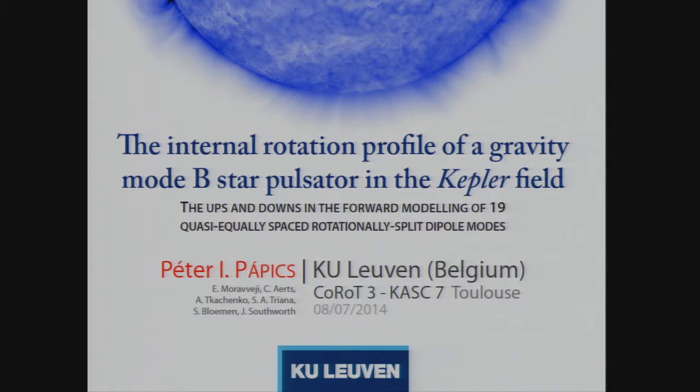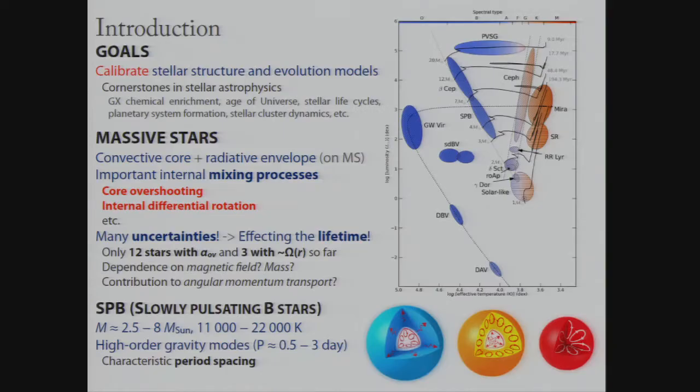For those who don't know me, I'm Peter Pravich from the University of Leuven, and as usual I'm going for the longest title of the seminar or conference. It's the internal rotation profile of a gravity mode B star pulsator in the Kepler field, or the ups and downs in the forward modeling of 19 quasi-equally spaced rotation split dipole modes. I'm very glad that my talk is after Don, because he already told you everything you need to know, and I'm just going a bit towards higher masses from Don's A star to a B star, but you will see that there are many similarities.